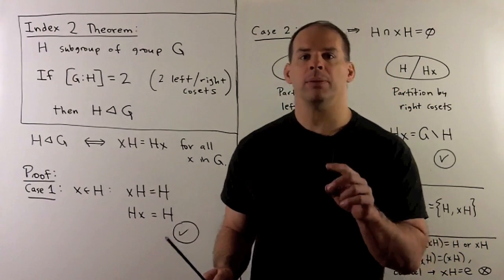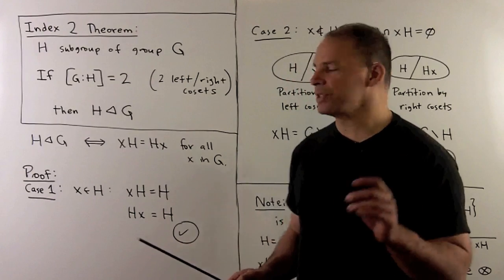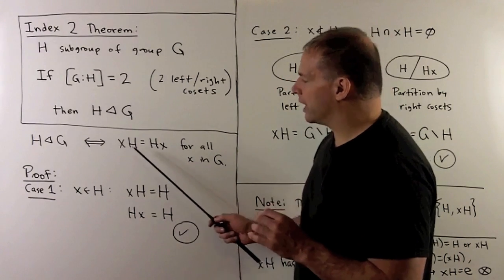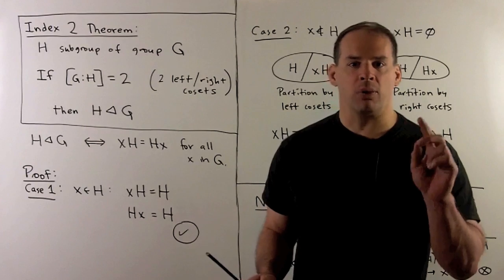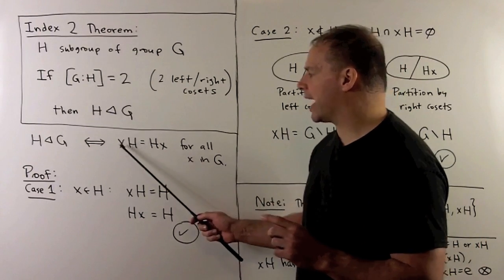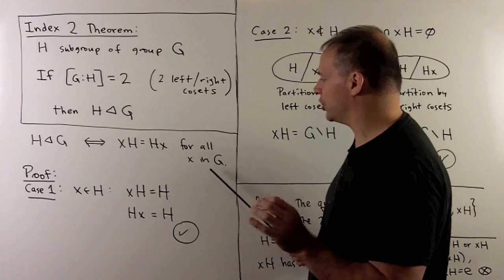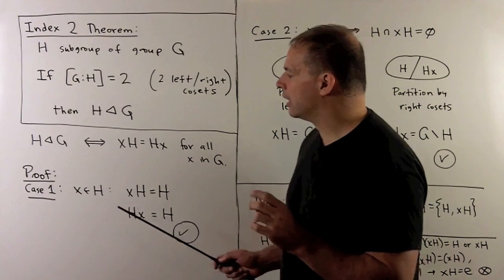Recall, for H to be a normal subgroup of G just says if we take a left coset, that's equal to its corresponding right coset. So I can just push the X to the other side, and that holds for any X in G.